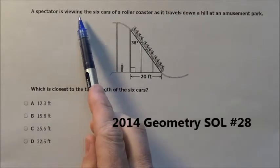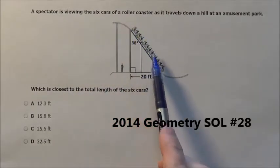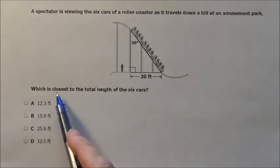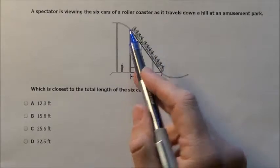Here's problem 28. It says a spectator is viewing the six cars on a roller coaster as it travels down a hill in an amusement park. Which is closest to the total length of the six cars?